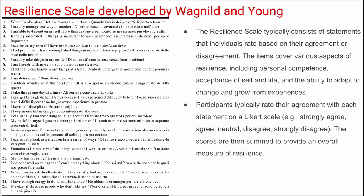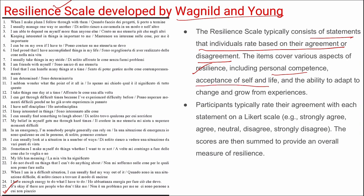Next is the Resilience Scale developed by Wagnild and Young. It consists of 25 items measuring resilience, covering personal competence, acceptance of self and life, and the ability to adapt to change and grow from experiences. Participants rate their agreement with each item on a Likert scale — strongly agree, agree, neutral, disagree, and strongly disagree — and the scores are summed to provide an overall measure of resilience.